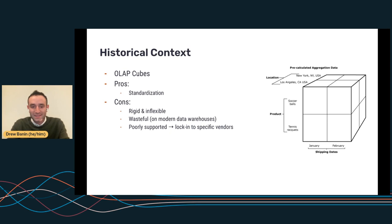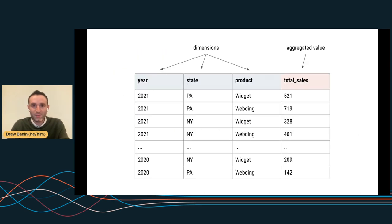This approach made sense 10, 20 years ago, but it's not the right approach for us anymore. So just to go deeper on what this looks like and why it's a challenge. This is an example of a cube that rolls up across year, state and product. And so if you imagine there's 10 years of data with 50 states and say 10 products, you have to calculate total sales for all of those combinations of dimensions. And so that gets you a 5,000 row table, which no problem, 5,000 rows is not a big deal.